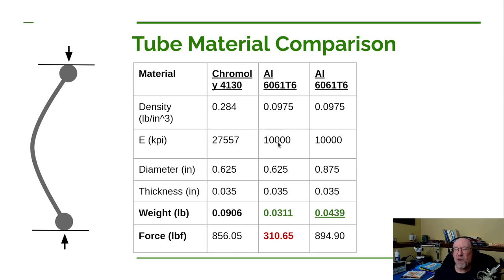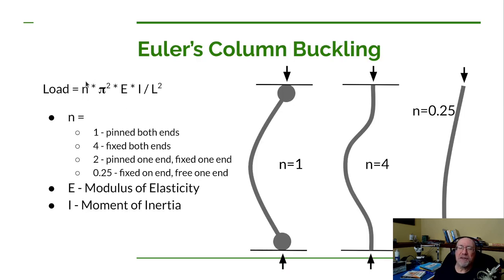The aluminum has roughly a third of the modulus of elasticity of the steel. So it's not as stiff as the steel. Up here in this equation, it's very similar to the way the n works. The E works the same way. So if the modulus of elasticity is a third of another material, that means the load that it can handle for an equivalent tube is going to be a third of the other material.